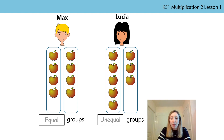We use the word equal to describe groups when there is the same number of objects in each group, and they are unequal if there is a different number of objects in each group.